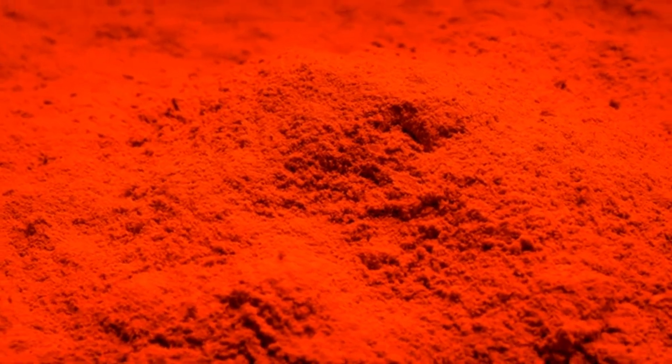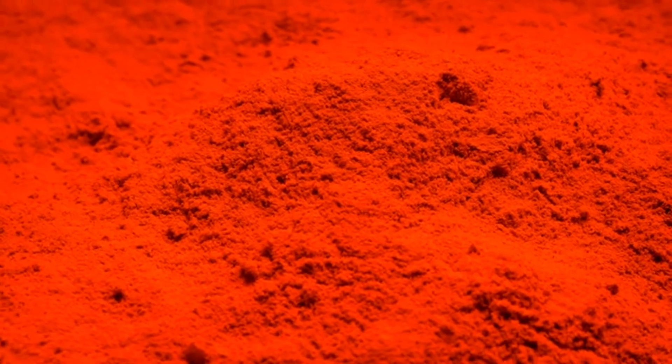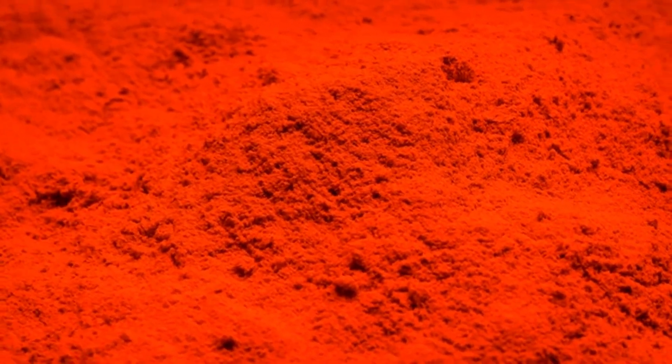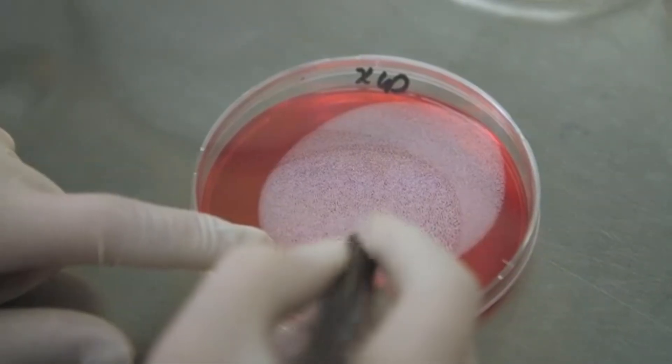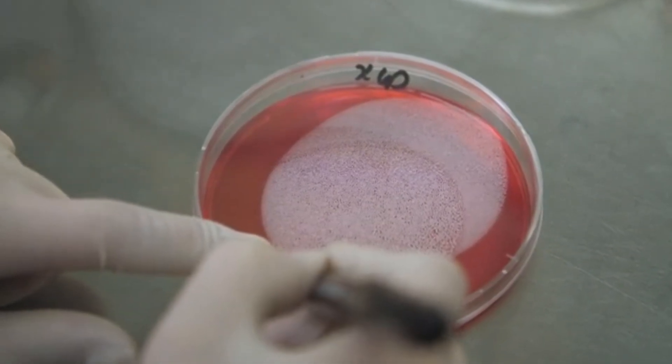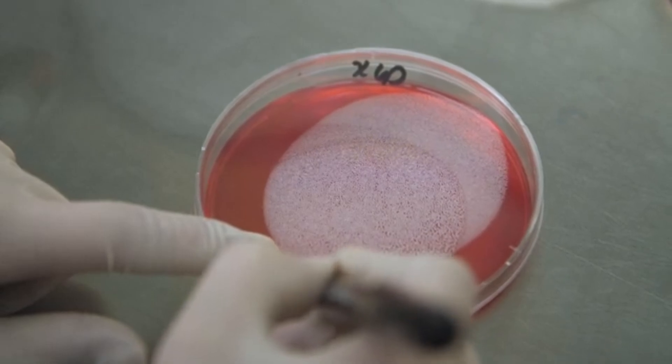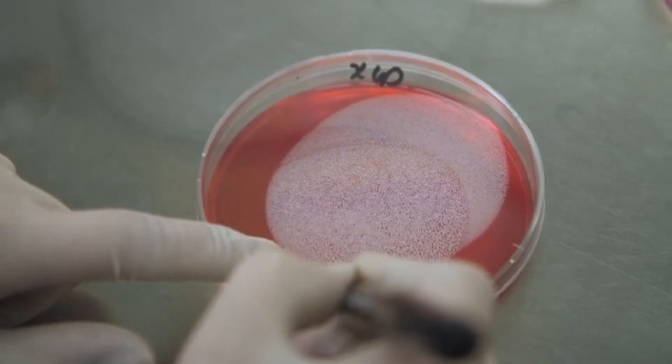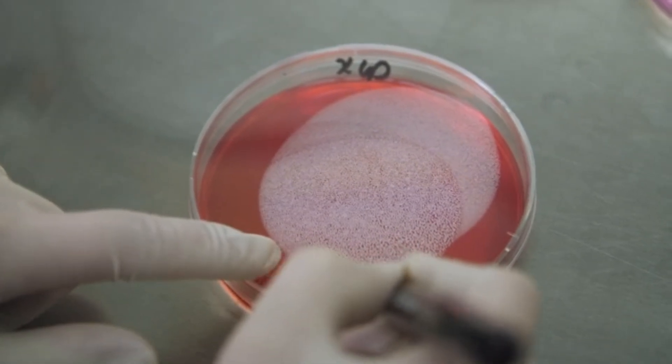Take red mud, for example. It's the byproduct of aluminum production and is loaded with iron, titanium, and rare earth oxides. A team of scientists from India demonstrated that Sulfobacillus thermosulfidooxidans can recover yttrium and lanthanum from red mud under thermophilic conditions, offering a more environmentally benign alternative to chemical leaching.